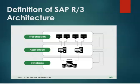SAP R/3 Architecture is a multi-tiered structure that comprises three main layers: the presentation layer, the application layer, and the database layer. This architecture model enables organizations to integrate and streamline their business processes and data management effectively. With SAP R/3, we are moving our resources from mainframe computing to the three-tier architecture of the presentation, application, and database layer.